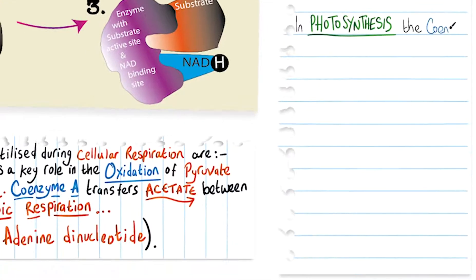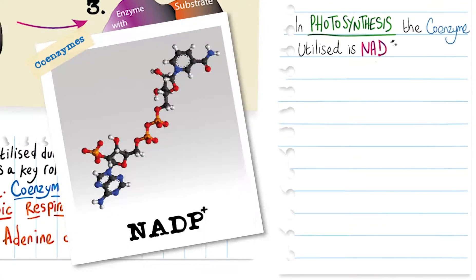In photosynthesis, the coenzyme utilized is NADP, nicotinamide adenine dinucleotide phosphate.